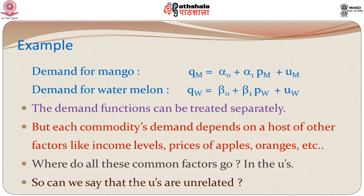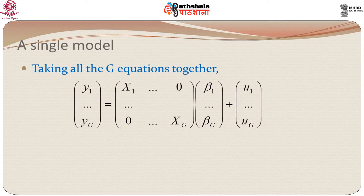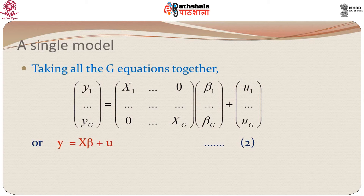So if there is correlation between u_m and u_w, should we look at the demand functions separately or take them simultaneously? Let us look at a single model for all the g equations taken together. We take y_1, y_2, ..., y_g and write them in terms of the x's, betas, and errors. The first row gives y_1 = x_1 * beta_1 + e_1, the second gives y_2 = x_2 * beta_2 + e_2, and so on. We can put all g equations together into a single model.